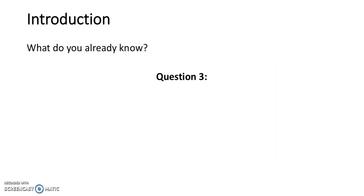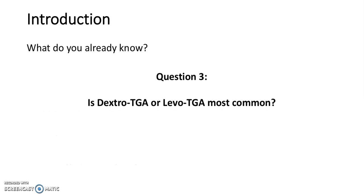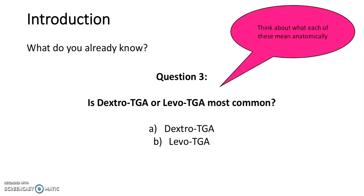Question 3: Is dextro-TGA or levo-TGA most common? A, dextro-TGA. B, levo-TGA. Think about what each of these mean anatomically. The answer is A, dextro-TGA. This means that the pulmonary artery and the aorta swap locations but don't change function.